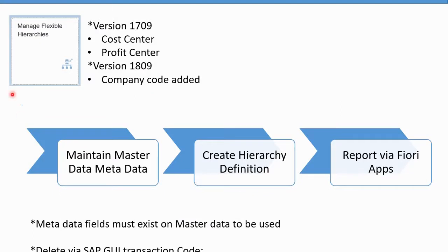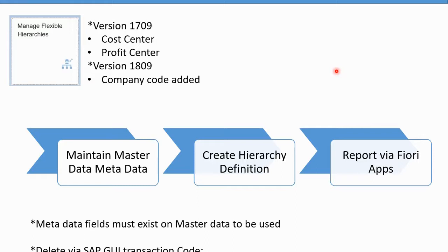The high-level process flow for managing flexible hierarchies is: first, maintain your master data; then create the hierarchy definition — for example, company code and functional area; the hierarchy gets generated; and then you can use it in the Fiori apps. Remember that to create the definition, you need to make sure the metadata or master data fields have been maintained. There's no point using a field like department on the cost center master record if you haven't actually maintained the values. Depending on your version, there are different capabilities — in version 1709, cost center and profit center are part of the flexible hierarchy structure, while on newer versions like 1809, company code is also added. We'll now get into lessons with live demonstrations of how to actually create those hierarchies.